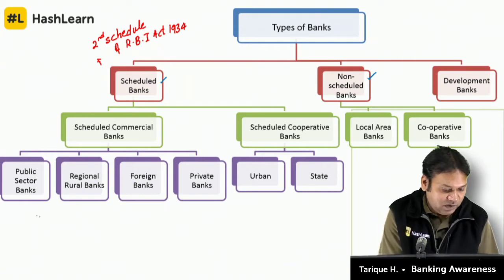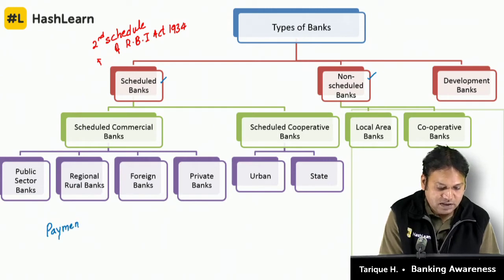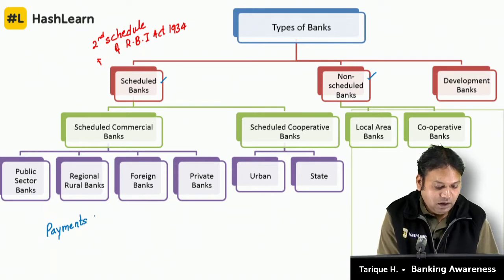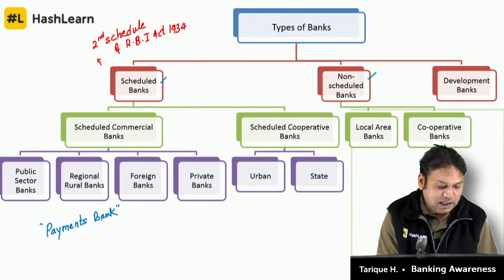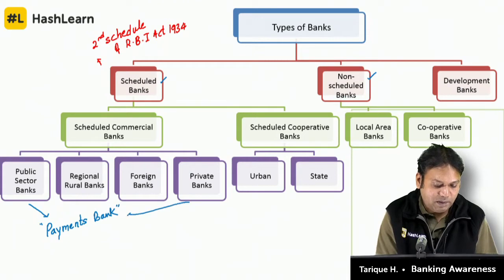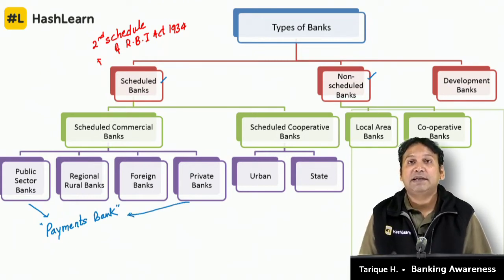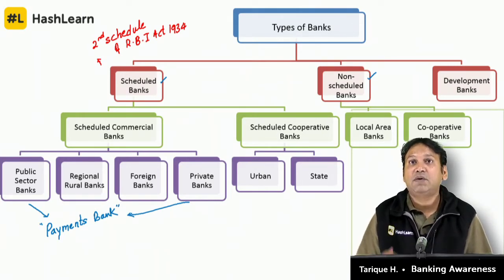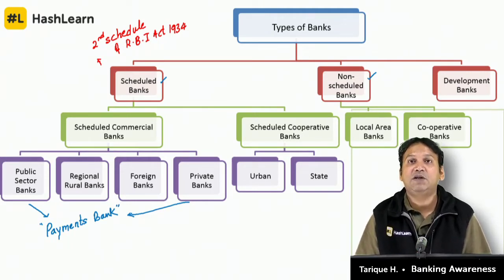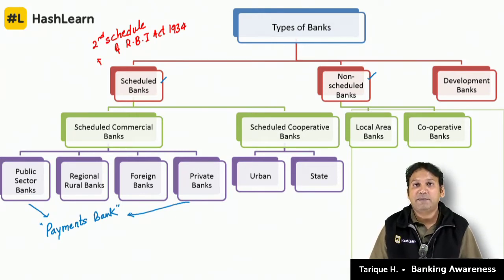There is a special type of bank called payments banks. Payment banks came up only in the year 2015. There is one public sector payment bank and most others are private. Payment banks allow a maximum deposit of one lakh rupees. They do not give debit cards, credit cards, or loans. These are mostly app-based services like Paytm Payments Bank, Airtel Payments Bank, Jio Payments Bank, Indian Post Payments Bank, and Fino Payments Bank.